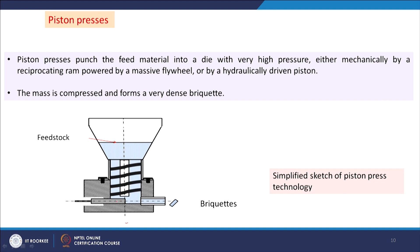In the piston press, feedstock is fed in and under gravity moves down into the press zone. The piston has a back and forth movement and presses the material, producing the briquette. The piston can give very high pressure, so the density of the material will be very high compared to other methods. The piston press punches the feed material into a die with very high pressure, either mechanically by a reciprocating ram powered by a flywheel, or by a hydraulic driven piston.